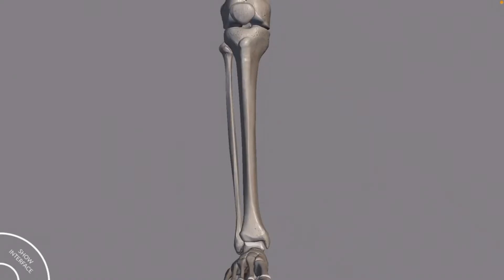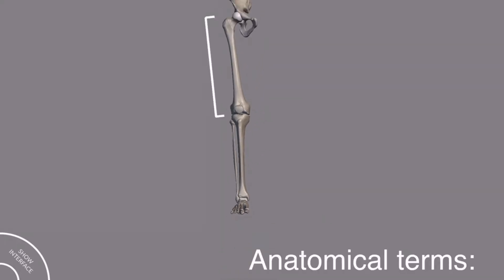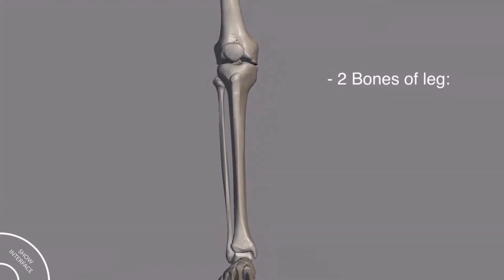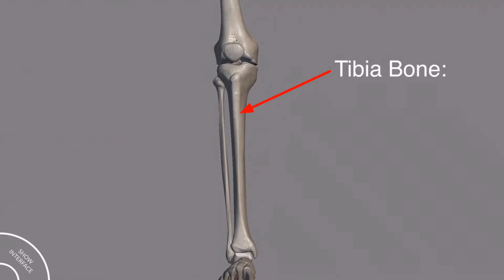In this video I will discuss the tibia bone in detail. The tibia bone is the bone of the leg — anatomically, this is the thigh portion and this is the leg portion, and in the leg portion we have two bones: tibia and fibula. The tibia bone is the second strongest bone in the human body; of course the first one is the femur bone.